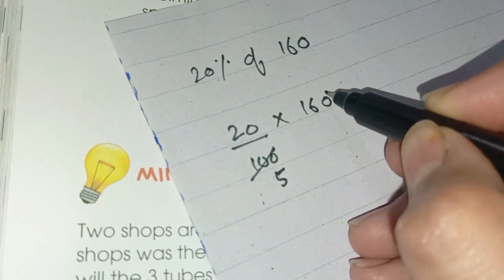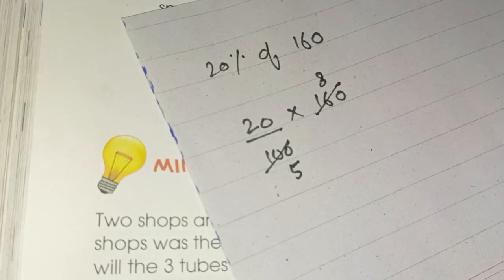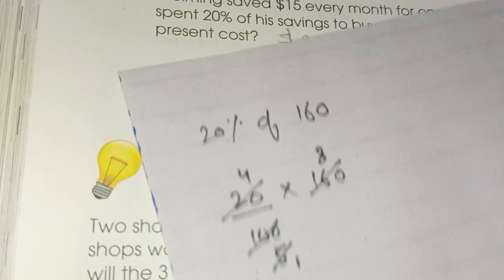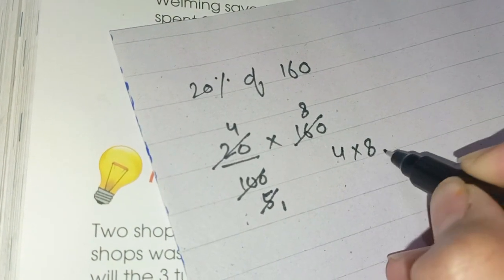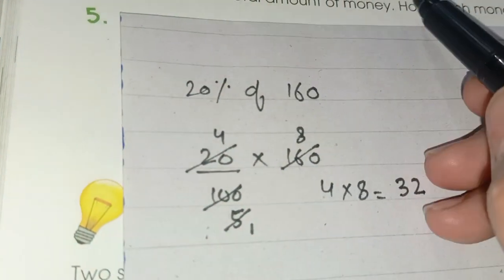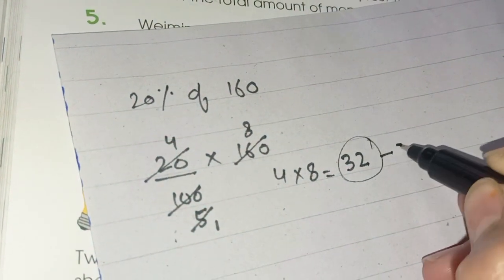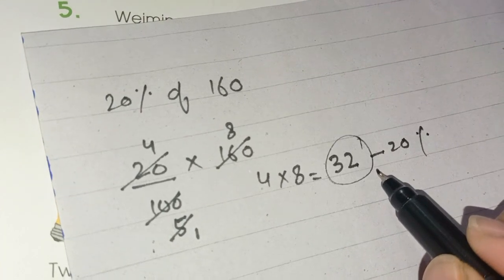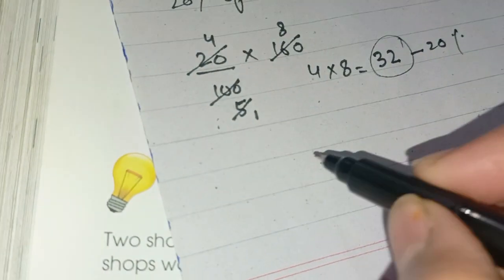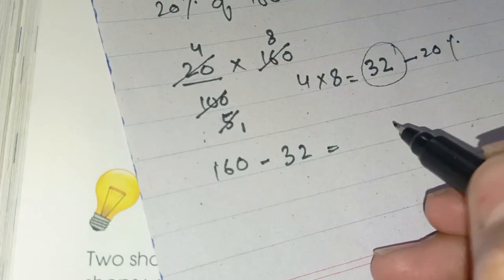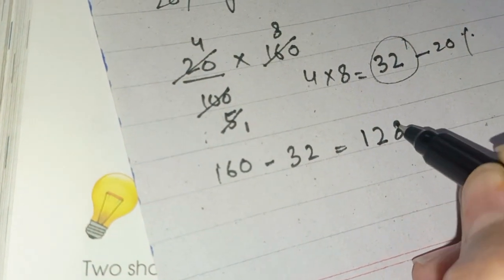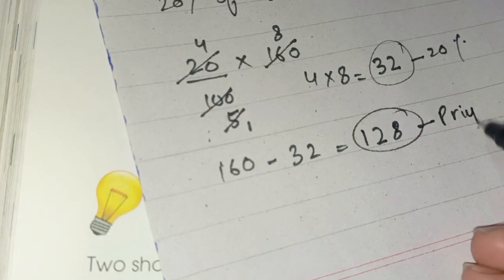Simplifying: 25 fives are 100, and 28 eights are 160. We get 5 fours are 20, and 4 eights are 32. So 20% of 160 is 32. Milling has $32. Now, to find Priya's amount, we calculate 160 minus 32, which gives us 128.